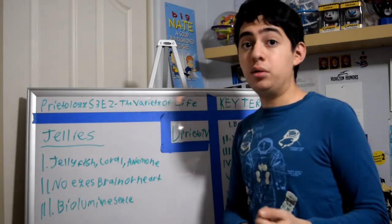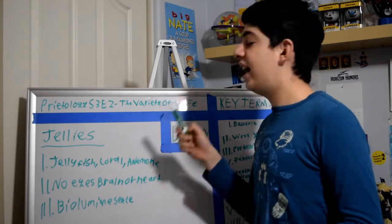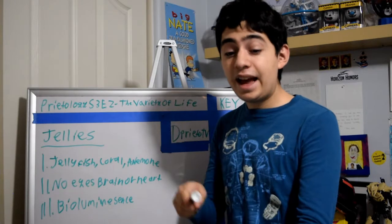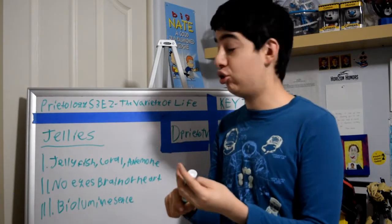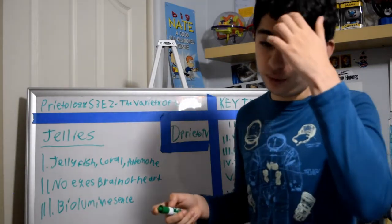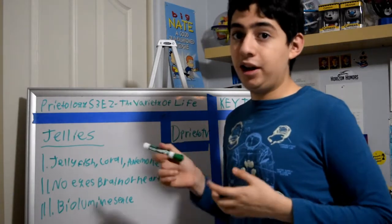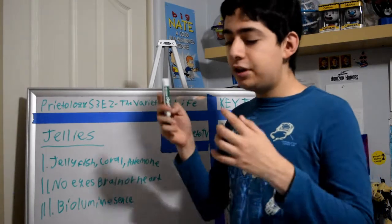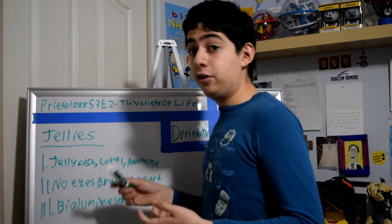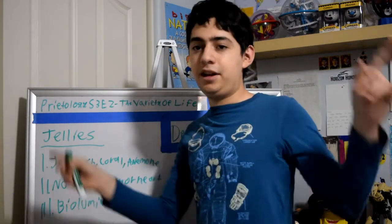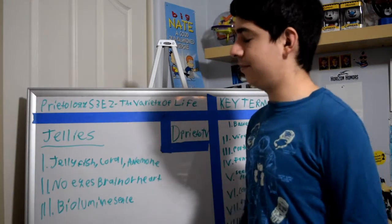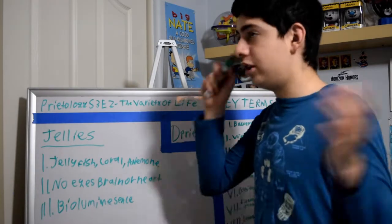Term 9: jellies. Jellies don't just include jellyfish — they also include coral and anemones. These are pretty strange creatures: they have no eyes, no brains, and no heart. They are actually 90% water. These creatures are usually bioluminescent — they have a property called bioluminescence, like some creatures that live in the dark depths of the ocean. They can glow in the dark to scare predators or to lure prey. Fun fact: there are 9,000 different species of jelly, including jellyfish, coral, anemones, and many other species.